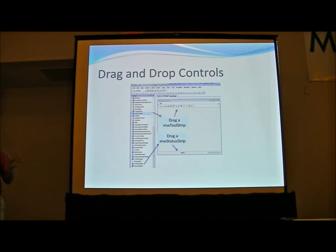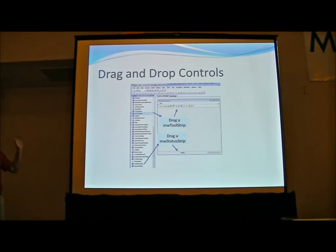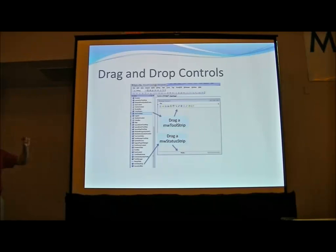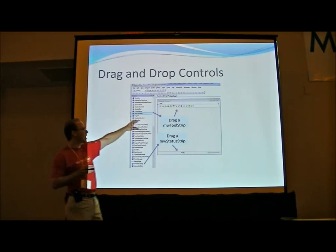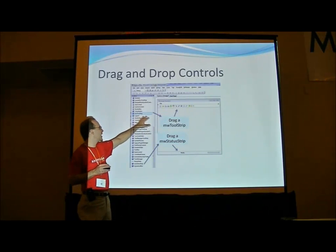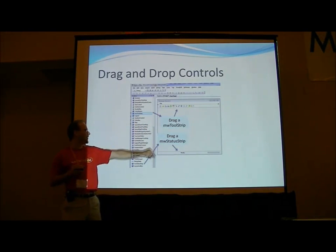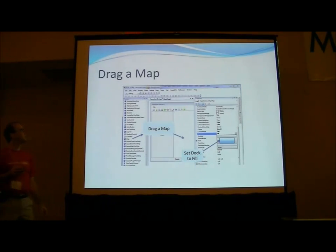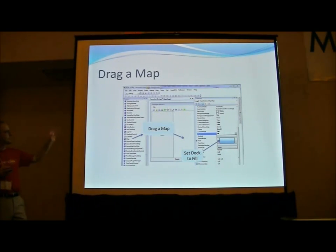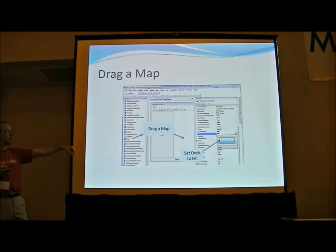From a user perspective, those are the things somebody using your application would get. You as a developer go through a process of adding these components to your project using a set of drag-and-drop instructions — you drag the toolbar strip, the status strip, and keep moving along. You drag the map onto your project.